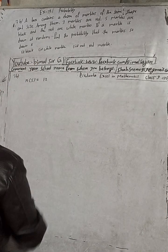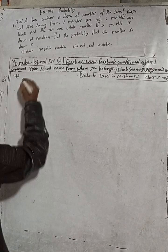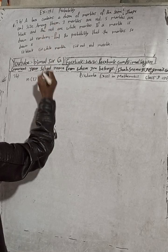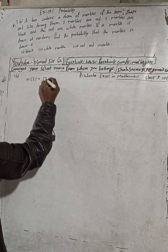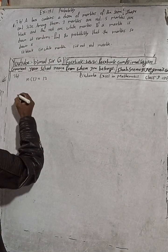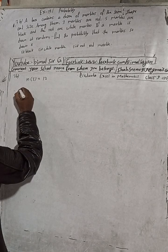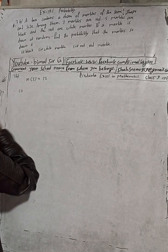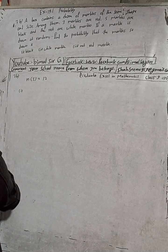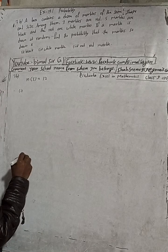First we will write our sample space. A dozen means 12, so n(S) = 12 pieces. Now let's do part one.